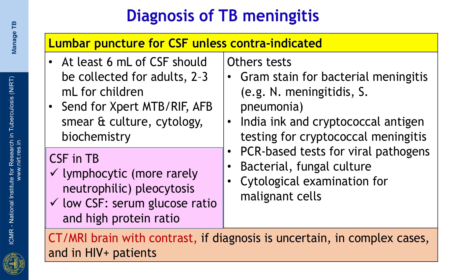For tubercular meningitis, lumbar puncture should always be done unless there is a contraindication. At least 6 ml of CSF should be obtained in adults and 2 to 3 ml in children. This specimen should be sent for GeneXpert, AFB smear, culture, cytology and biochemistry. In cases of tuberculosis, CSF usually shows lymphocytosis, although rarely it may show neutrophilic pleocytosis. Low CSF to serum glucose ratio and high protein indicate tuberculosis.